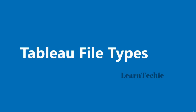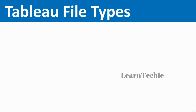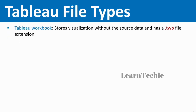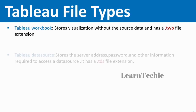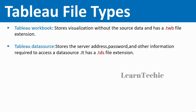Hello and welcome to this video. In this video, I'm going to describe the different file types available in Tableau. The first is the Tableau Workbook (.twb), which stores a visualization without including the source data. The second is the Tableau Data Source (.tds), which stores the server address, password, and other information required to access a data source, such as a Microsoft SQL Server, Oracle, or MySQL database.